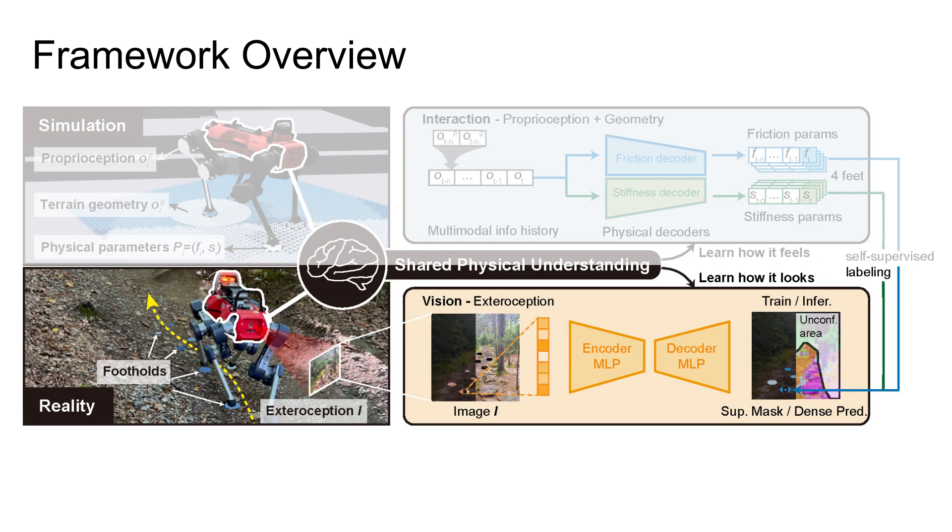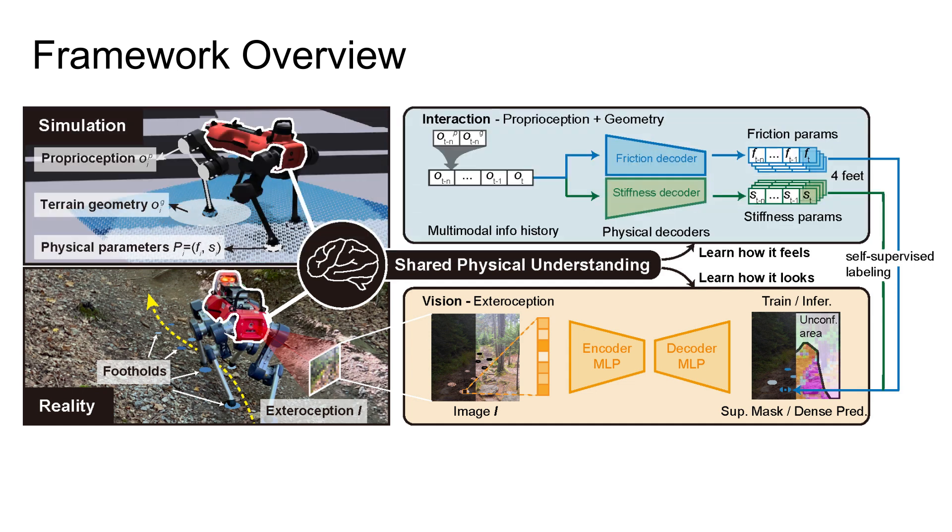The second part is a vision pipeline, featurizing input RGB camera images and producing dense prediction of the physical parameters in the environment with a confidence mask to reason about the reliability of the output. The visual MLP network is trained online during real-world deployment with labels provided by the physical decoders.